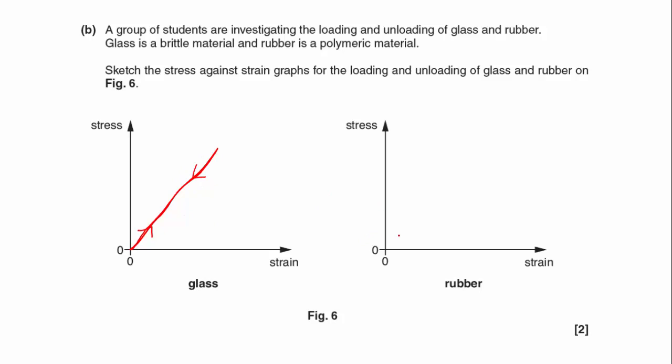And then with rubber, what we're going to find is it would load, but then when it unloads it takes a different path. It is still elastic because it comes back to the same strain, which would be zero, so it returns to its original shape. And I've got to distinguish between which is loading and which is unloading.